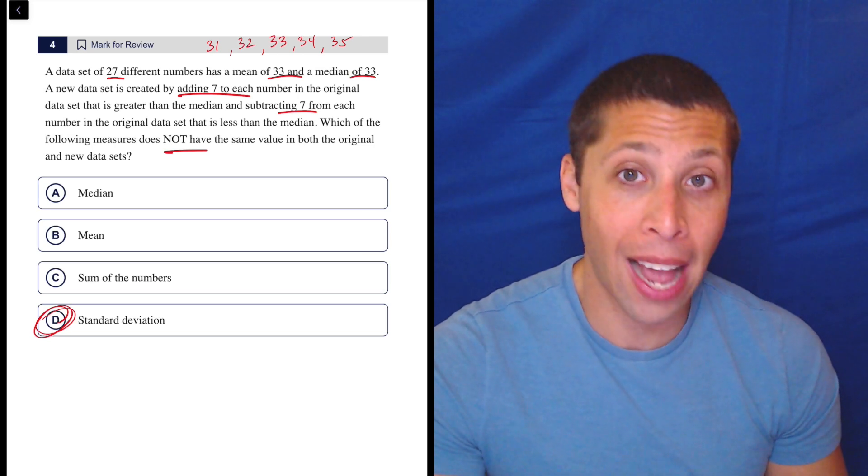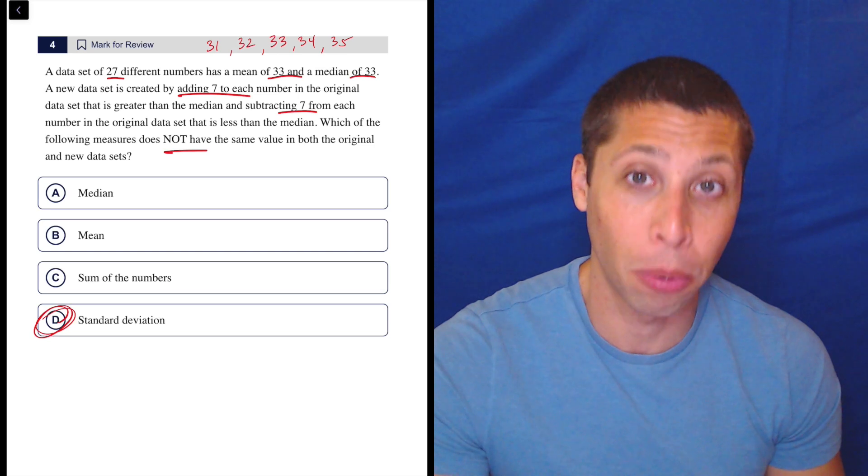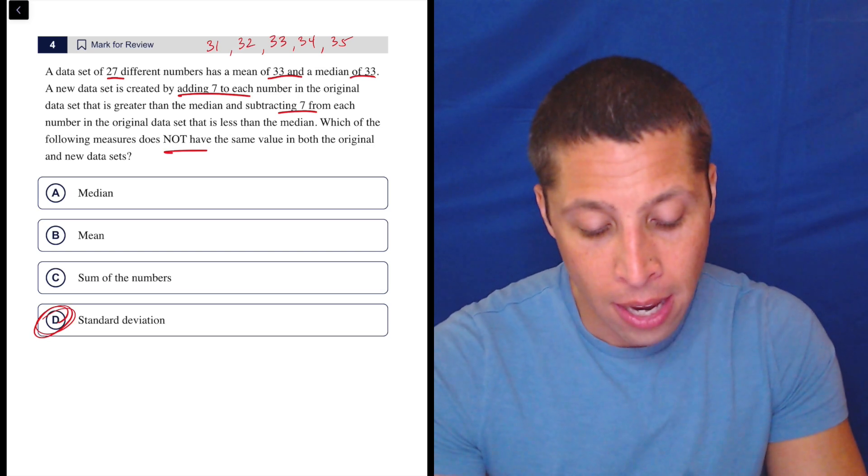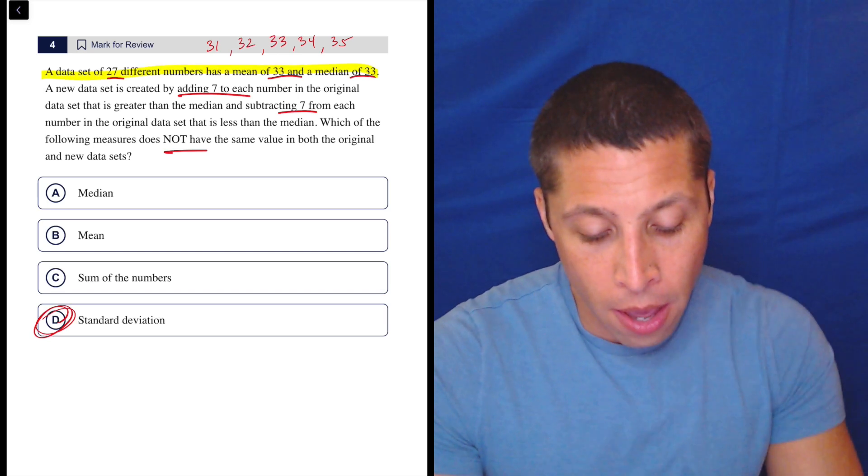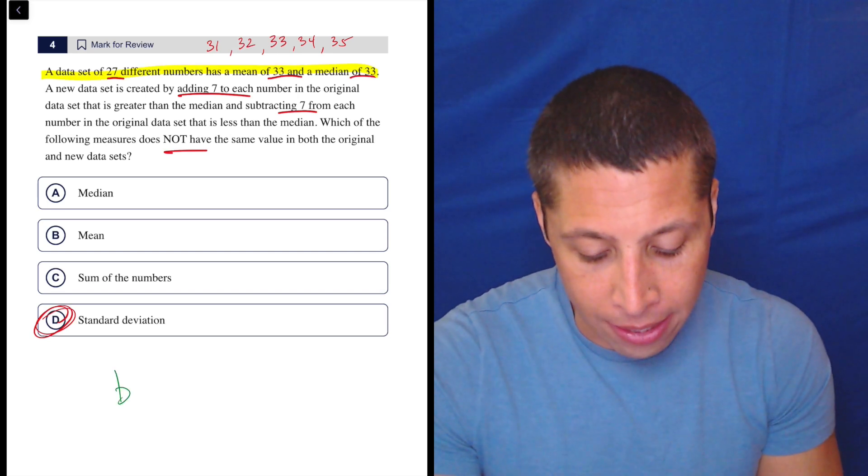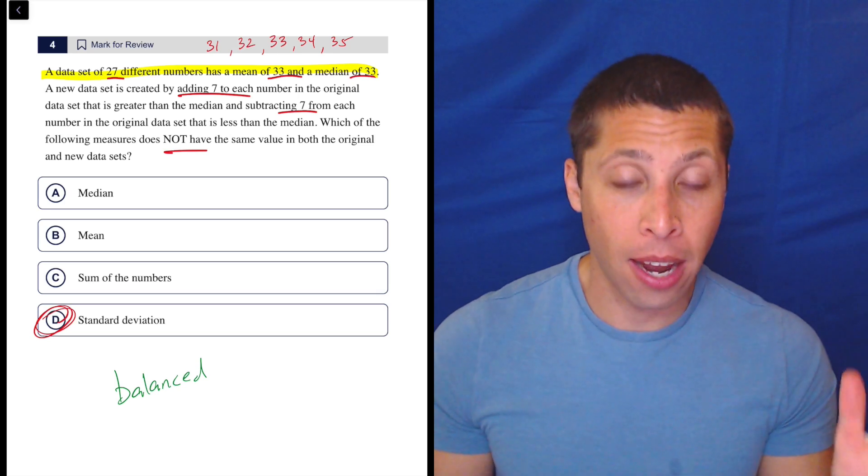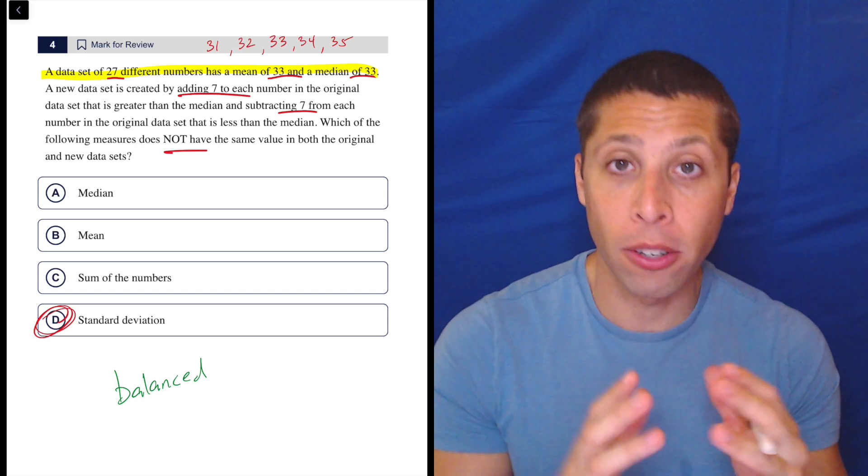But in the first module, you might have 10 minutes extra at the end if you're doing everything right to really tinker with this question and prove it. In the hard module, you will not. So what you need to recognize is that when they describe this data set, they are describing a data set that is balanced, right? Whatever's happening on either side of that mean and median is the same, right?